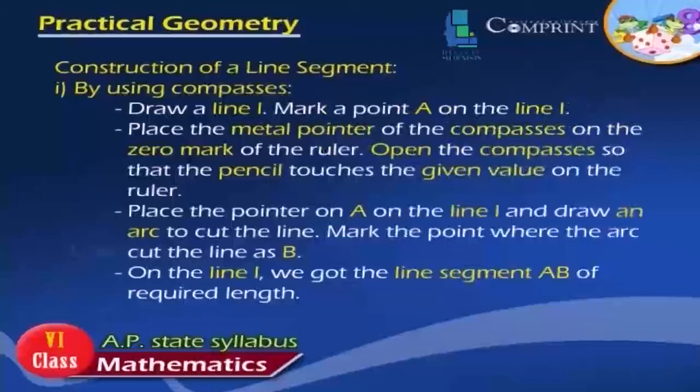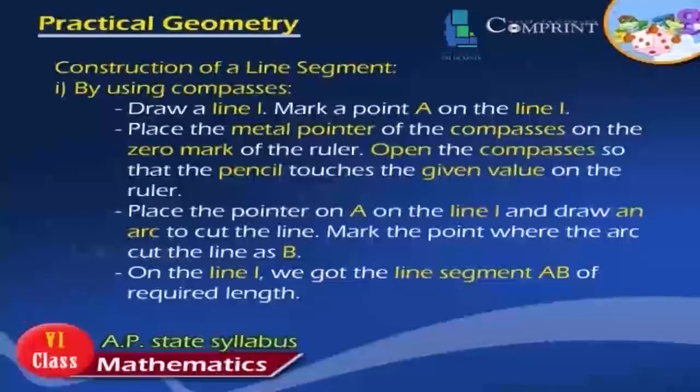Two, by using compass. Draw a line L. Mark a point A on the line L. Place the metal pointer of the compass on the 0 mark of the ruler. Open the compass so that the pencil touches the given value on the ruler. Place the pointer on A on the line L and draw an arc to cut the line. Mark the point where the arc cut the line as B. On the line L, we got the line segment AB of required length.